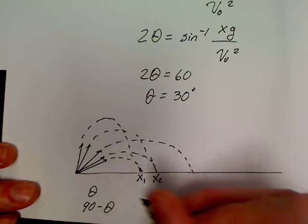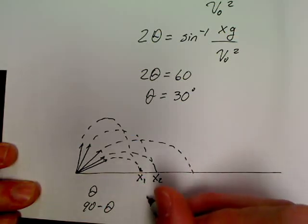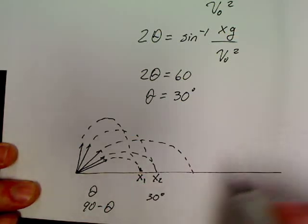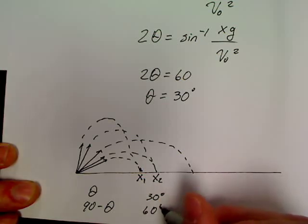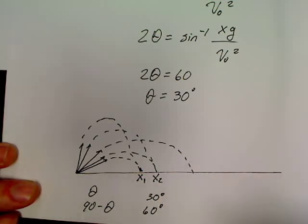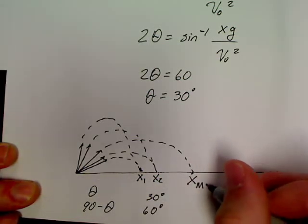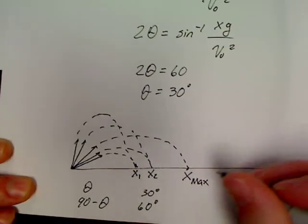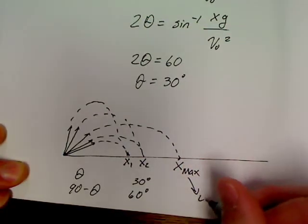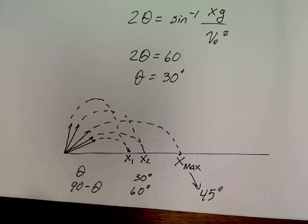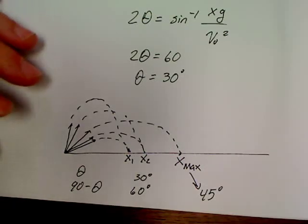So, if you found that the first angle in a projectile to shoot a certain distance was 30 degrees, then the second angle would be 60 degrees in that problem. Now, I don't know if you can guess it, but what angle do you think gives you your maximum range? Well, that maximum range would be from a 45 degree launch angle for a maximum range.